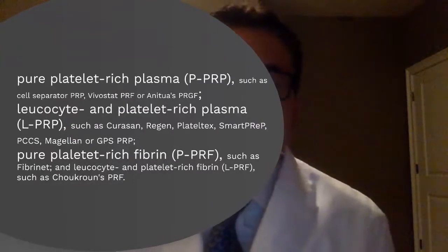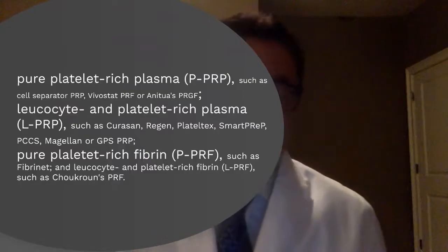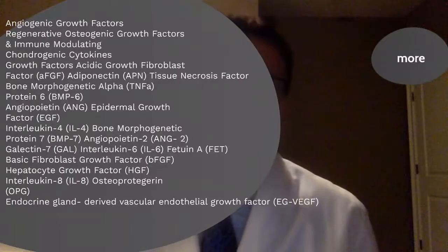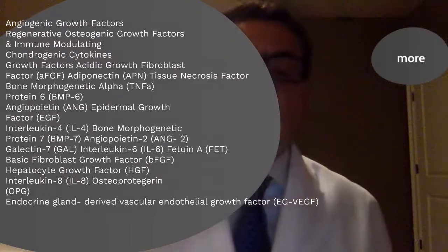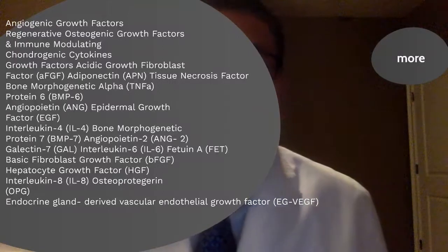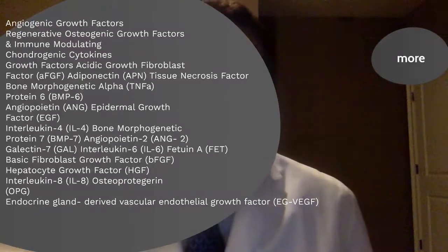There are essentially three types of PRP: pure PRP, leukocyte-rich PRP, and pure platelet-rich fibrin — and there are different ways to produce each one with different properties. You have to be very familiar with these differences before deciding which method you're going to use and what results you expect.